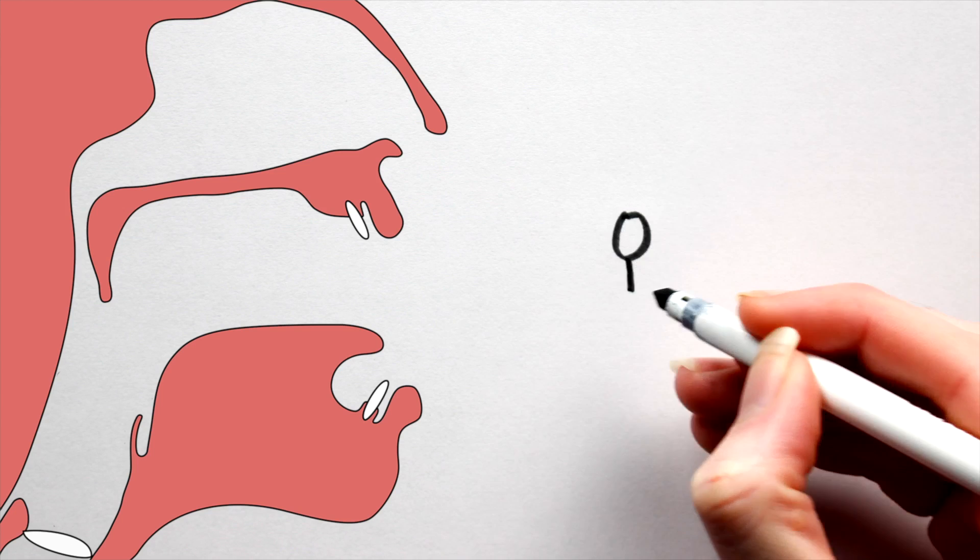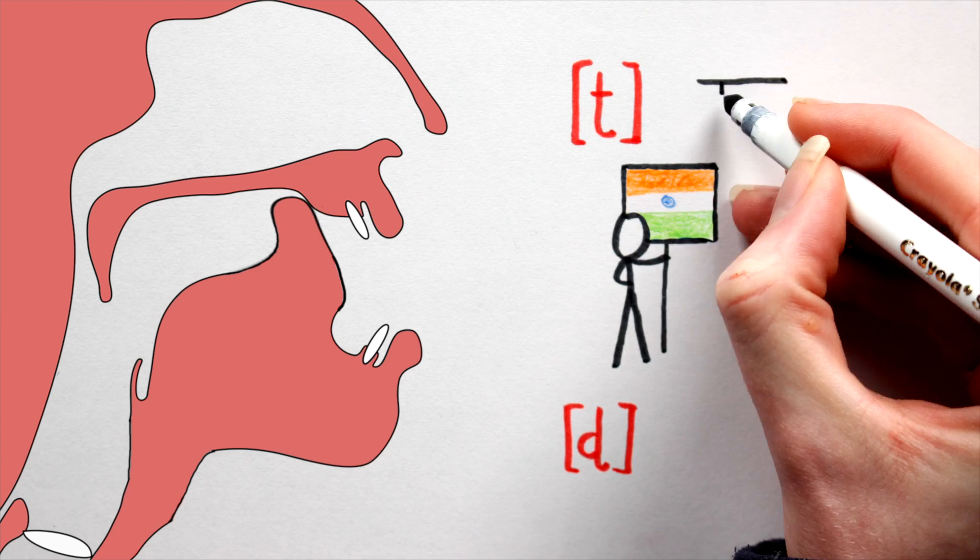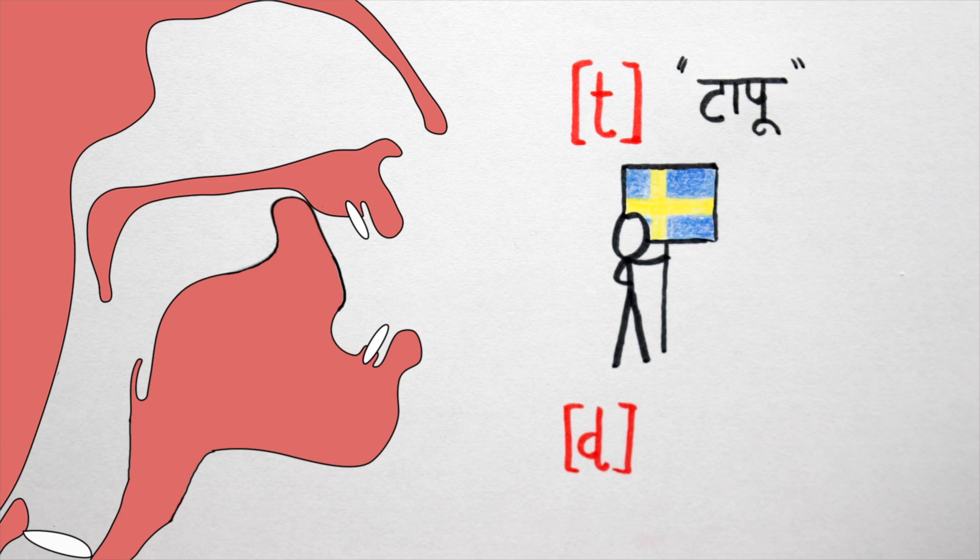Six, retroflex. We have no retroflex consonants in English. They are formed by curling the tongue back in the mouth and touching the roof of the mouth in the general post-alveolar area. They sound a little like this, as in the Hindi word for island, tapu, and the Swedish word for north, nord. Apologies, speakers of Hindi and Swedish. I did my best.